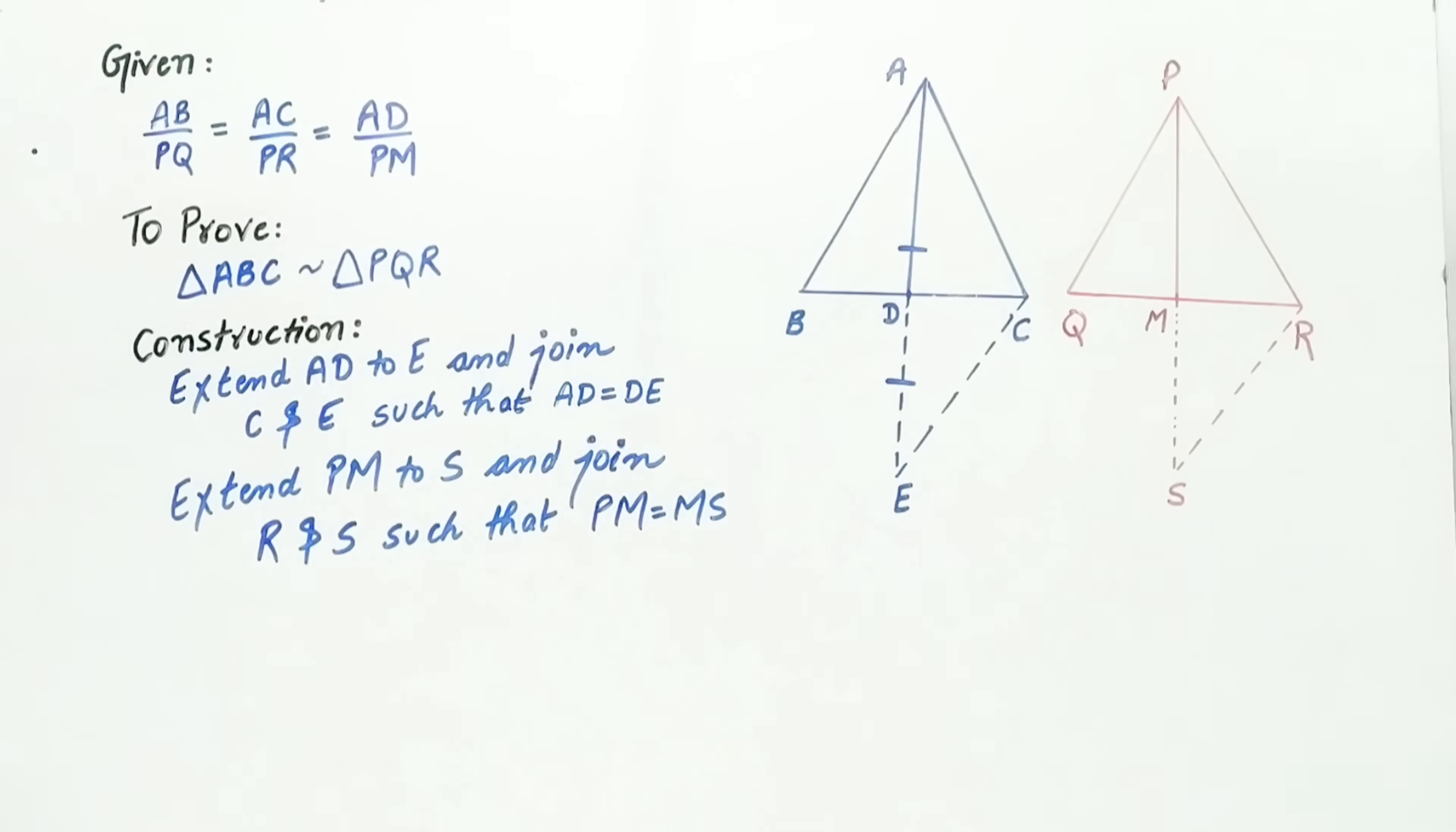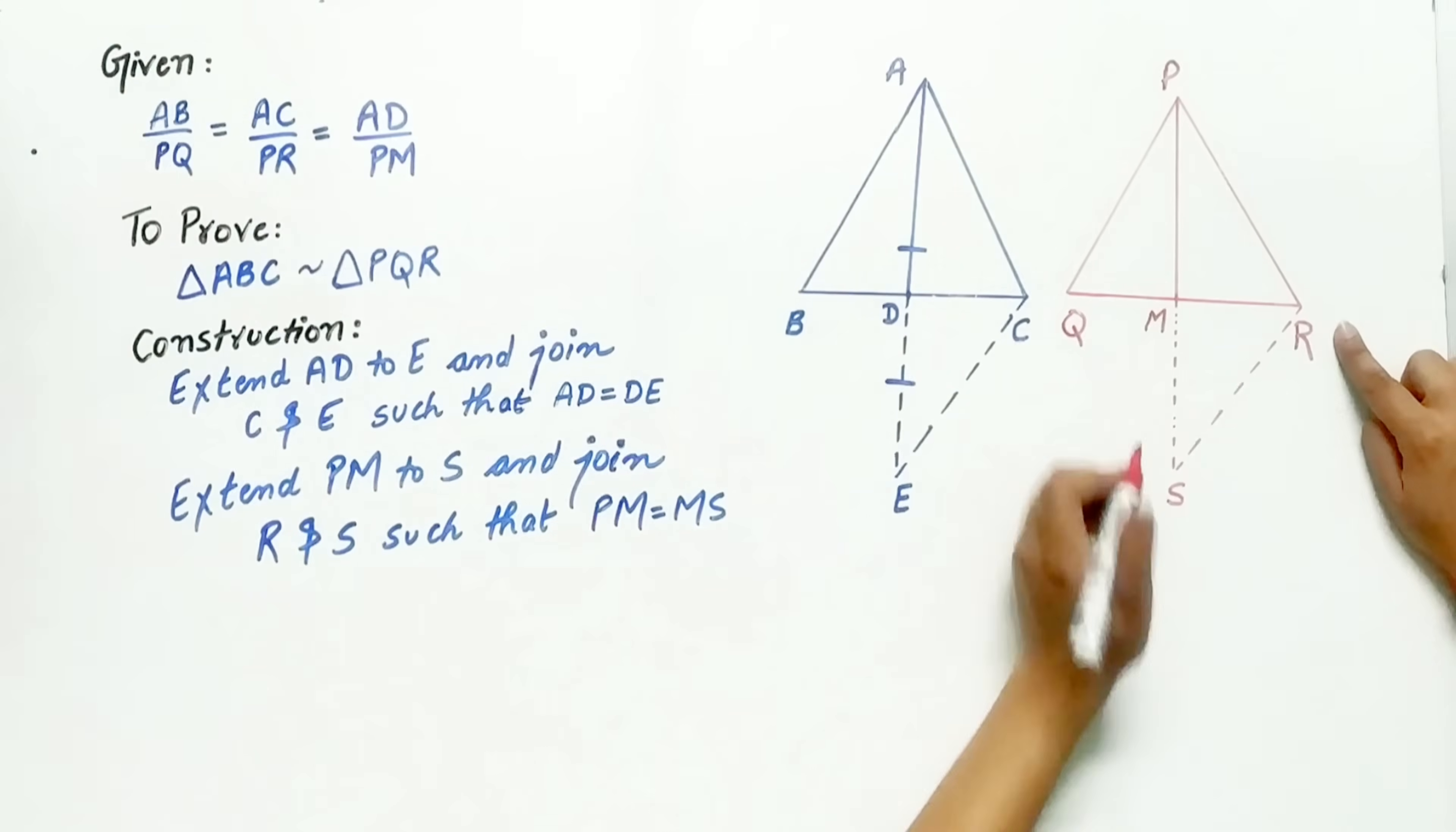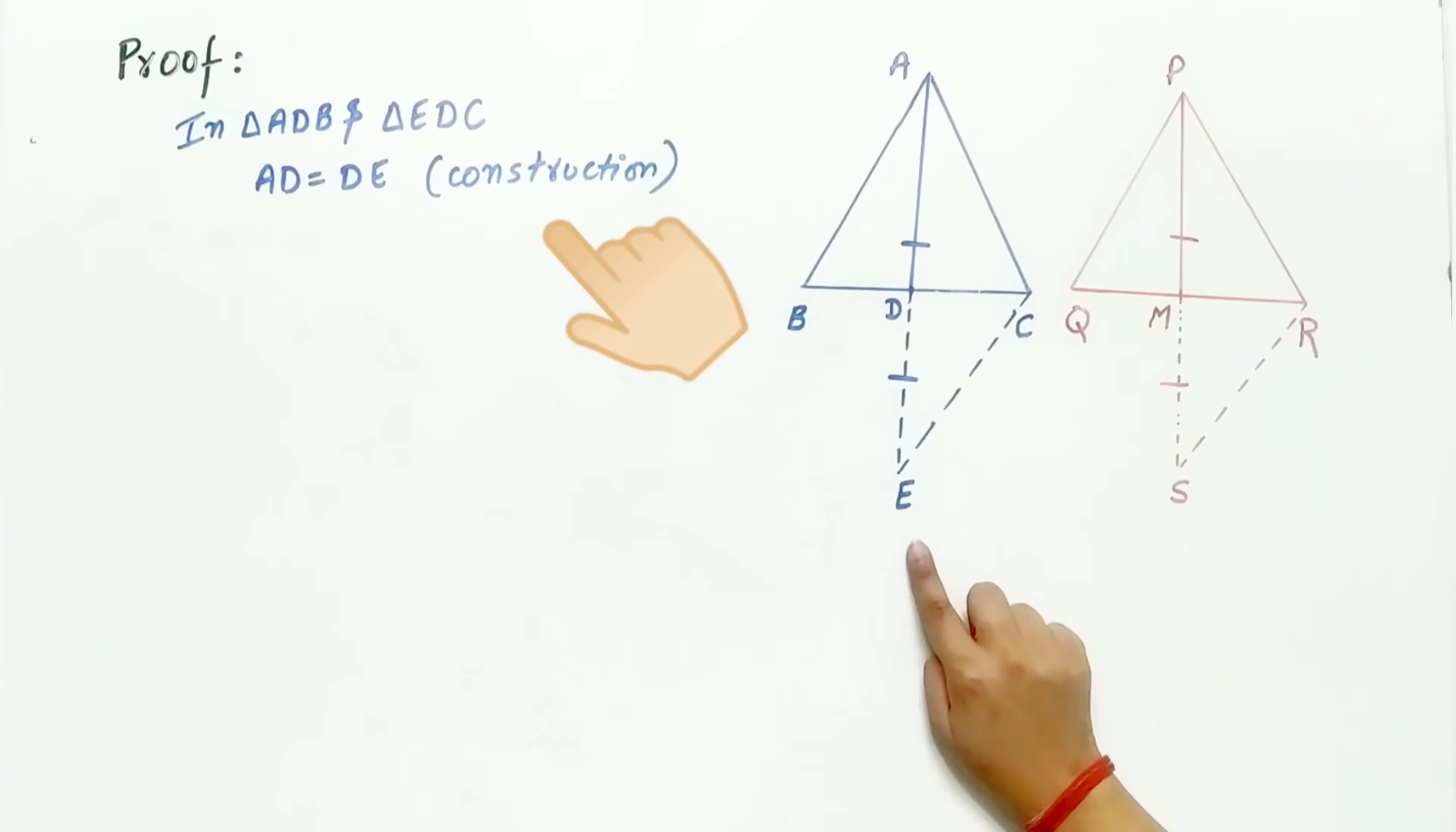Similarly extend PM to point S and join R and S such that PM is equal to MS. Now look carefully in triangle ABD and triangle EDC. AD is equal to DE. How? By construction.